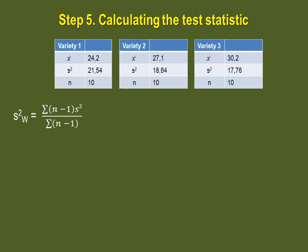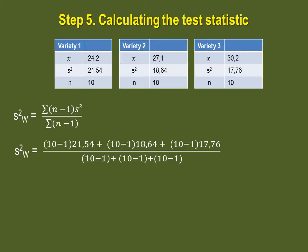So here is the equation. Now, our first variety has an n of 10. So 10 minus 1 times the variance of the sample, 21.54. Add to that the same thing but for the values of variety 2.